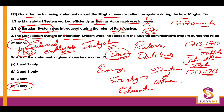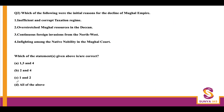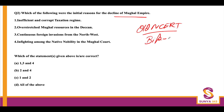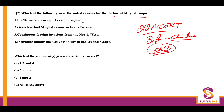The second question asks which of the following were the initial reasons for the decline of the Mughal Empire. For this topic, make sure you go through your old NCERT — Bipin Chandra, chapter one; the last three pages will give you enough information. The four options are: inefficient and corrupt taxation system; overstretched Mughal resources in the Deccan; continuous foreign invasion from the northwest; and infighting among native nobility in the Mughal court.